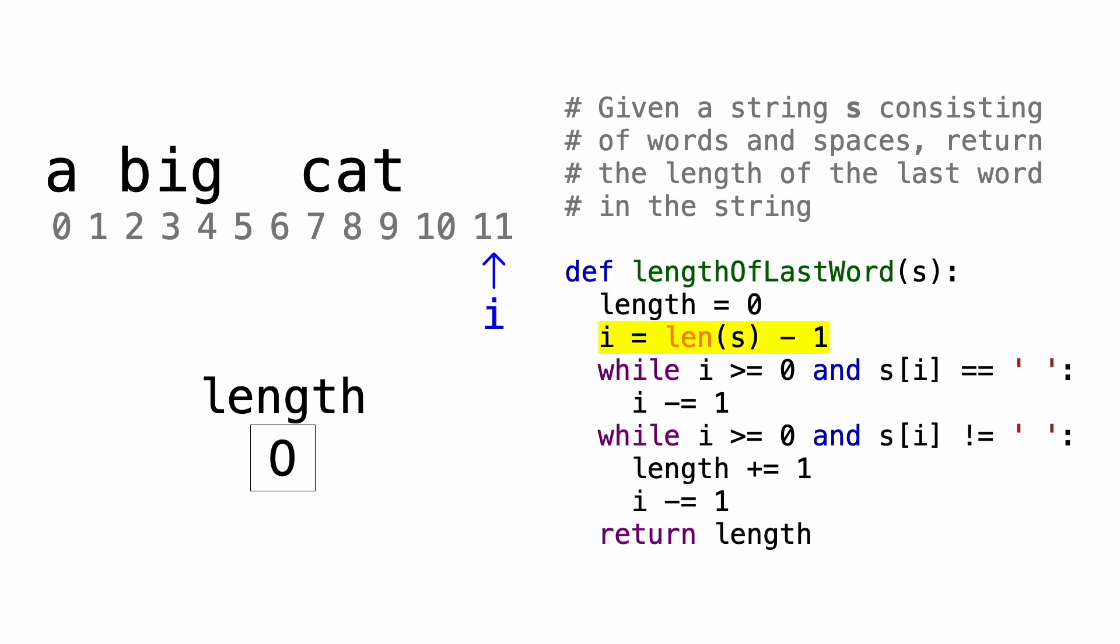We'll then use a variable called i to traverse the string, and we'll initialize it to the length of the string minus 1. So since the length of the string is 12, i will point to index 11 of the string, which is the last character.